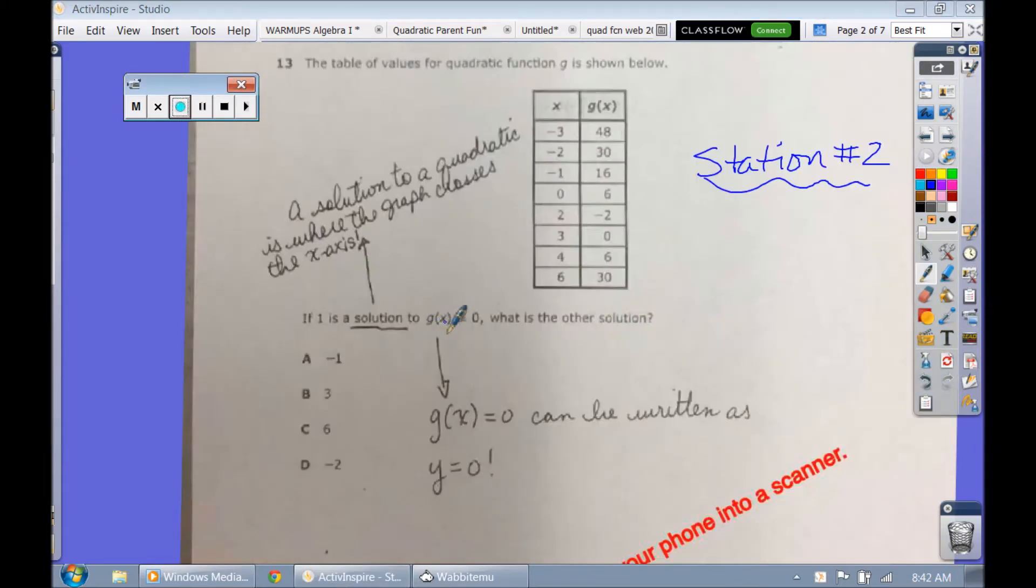Alright, so in this problem here, they're just asking you what is a solution to this quadratic if they give you this table. So G of x is the same as saying y. And for you to have an x-intercept that crosses the x-axis, it has to have a y of 0. So they tell you if you have a y of 0 and 1 is an answer, well, look for another 0. And you'll see that it crosses there at 3. So you just have to look for the 0s. You're looking for where the y's are 0s. And that's where it crosses the x-axis.